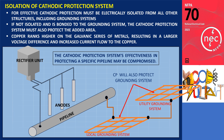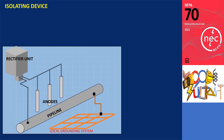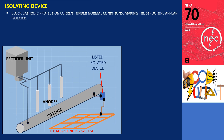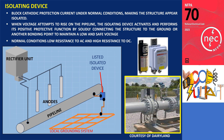This is one reason why isolating a cathodically protected pipeline is necessary. However, electrical codes require that metals susceptible to becoming energized, such as during lightning strikes or surges, be grounded and bonded to achieve equipotential. This is accomplished by installing a listed isolator device. The purpose of this device is to block cathodic protection current under normal conditions, making the structure appear isolated. However, when voltage attempts to rise on the pipeline, the isolating device activates and solidly connects the structure to the ground or another bonding point to maintain a low and safe voltage. Once the event is over, the device automatically switches back to its normal mode of blocking DC. Under normal conditions, this device exhibits low resistance to AC and high resistance to DC. The provided photo serves as an example of an installed decoupler by Dairyland, showcasing such a device in practice. Thank you all for watching.